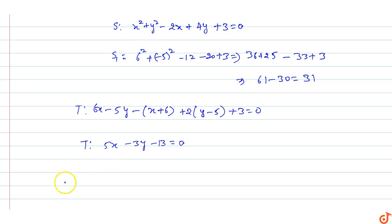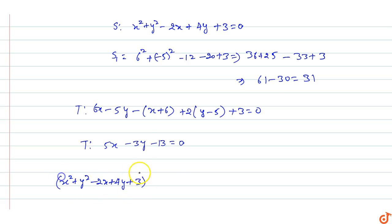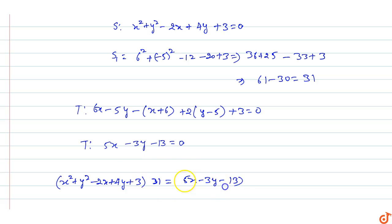The equation of the pair of tangents is SS1 = T², which gives: (x² + y² - 2x + 4y + 3) · 31 = (5x - 3y - 13)² on the right-hand side.